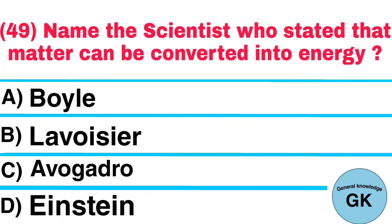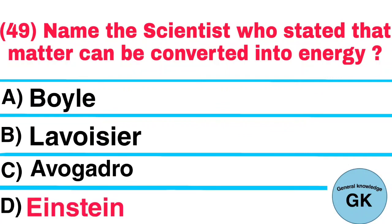Question number 49. Name the scientist who stated that matter can be converted into energy: A. Boyle, B. Lavoisier, C. Avogadro, D. Einstein. Answer: Einstein.